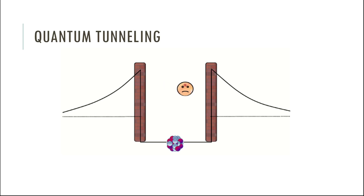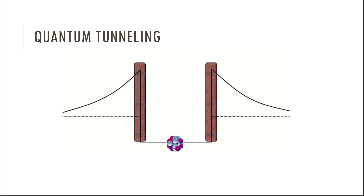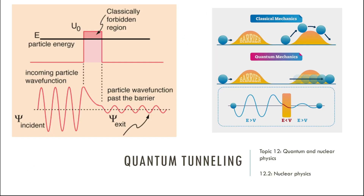We can't predict when alpha decay will happen because it is fundamentally defined by a probability math function. There's an animation showing the alpha particle breaking free. So that's quantum tunneling — the particle isn't allowed there, it doesn't have enough energy, but the rules of statistics, probability, and the wave function say it could be there right now. For exams, know that the size and mass of the barrier makes tunneling less likely, and be able to describe what quantum tunneling generally is.